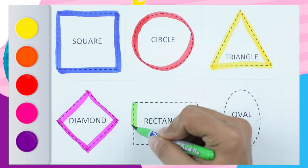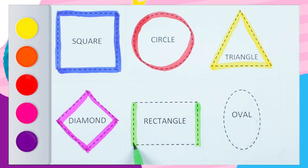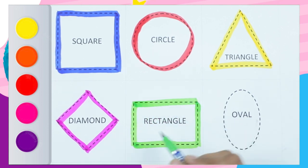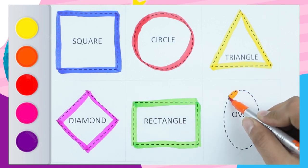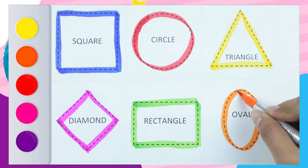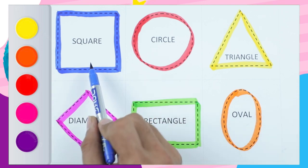Rectangle — straight line, standing line, second standing line, sleeping line — two sleeping lines, two standing lines — it's a rectangle! Green color rectangle. Orange color oval — it's an oval! Orange color oval shape.